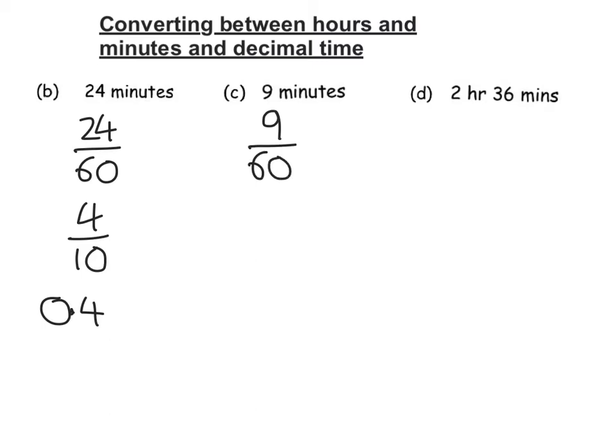Hopefully you might have this in a calculator paper, and if you do, remember that 9 over 60 is the same as saying 9 divided by 60. And 9 divided by 60 is 0.15 hours, so that's my answer for that one. Better put my hours here as well.